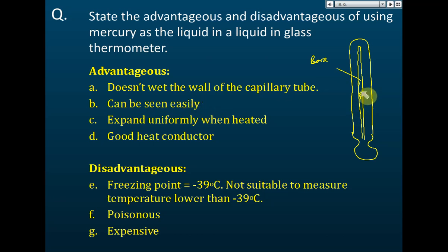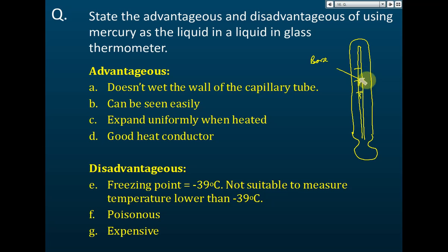Mercury can expand uniformly when heated — for example, every 5°C increase causes the same 2 cm expansion. Some substances expand differently at different temperature ranges, but mercury doesn't have this problem. It is also a good heat conductor, meaning the heat absorbed by the bulb is transferred quickly to the whole mercury column, causing it to expand uniformly and making readings more accurate.